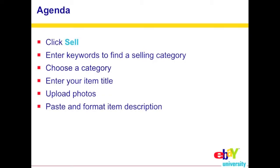Let's go ahead and show you a couple examples of what it looks like to actually start a listing. In this section, we're going to look at what it looks like to sell an item: entering keywords to find the selling category, choose a category, enter your item title, upload photos, and paste and format the item description.